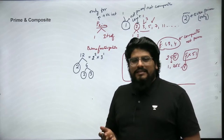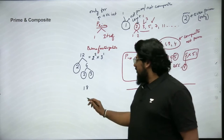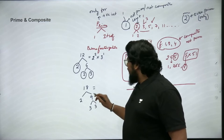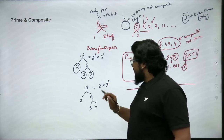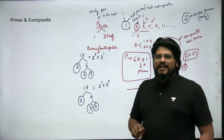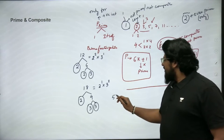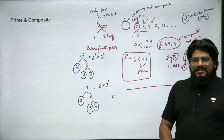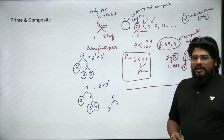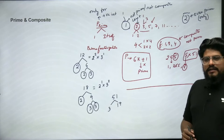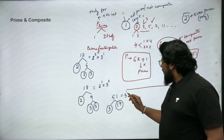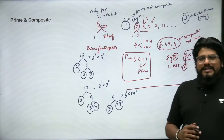So the prime factors of 12 are 2, 2, and 3. Prime factorization is splitting the number into its least prime factors. So 12 = 2² × 3¹. For prime factorization of 18: start with 2, giving 9, and 9 splits into 3 and 3. So 18 = 2¹ × 3². For 51: it is not divisible by 2, so try 3. 3 into 17 gives 51, and 17 is a prime. So the prime factors of 51 are 3¹ × 17¹.